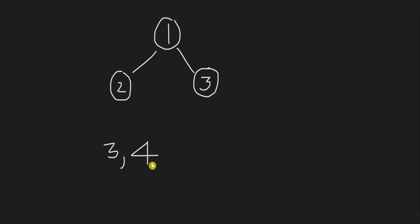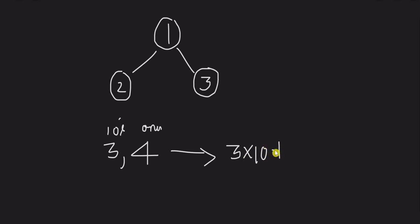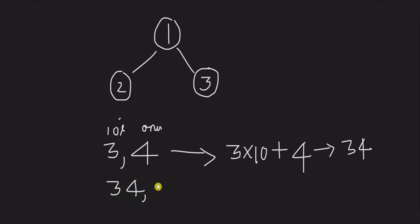So what do we do with 34? There's a ones digit and a tens digit. This is the ones digit, this is the tens digit. So ones, tens, hundreds. To get 34 from digits: 30 plus 4 is 34. If we have 34 and want to append a new digit, we multiply by 10.